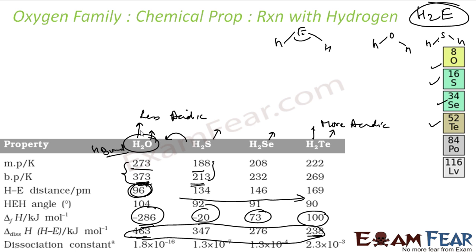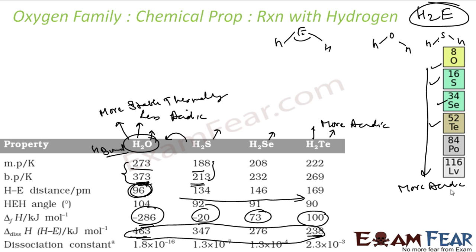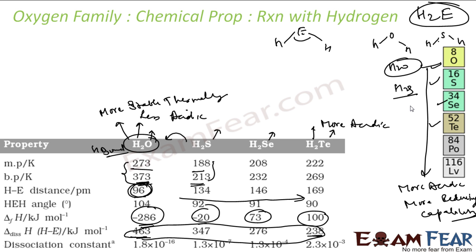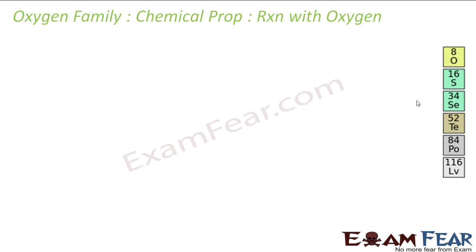The thermal stability of the hydrides also decreases down the group, again because of decreasing bond dissociation enthalpy. All hydrides except water have reducing capacity, and this reducing character increases going down the group. The acidic character also increases from H₂O to H₂Te — water is less acidic, H₂Te is more acidic. So H₂S is less stable, more reactive, more acidic, and has more reducing power than water.